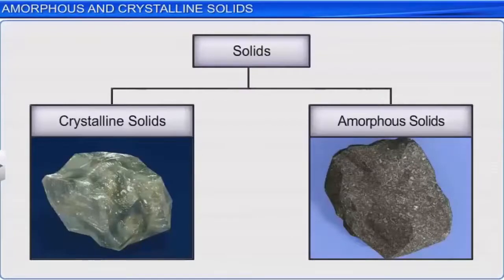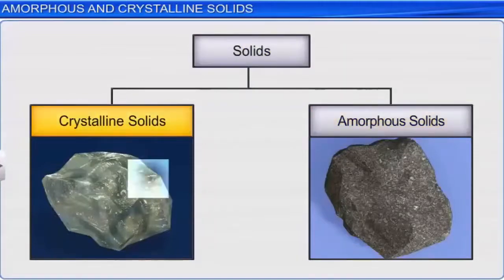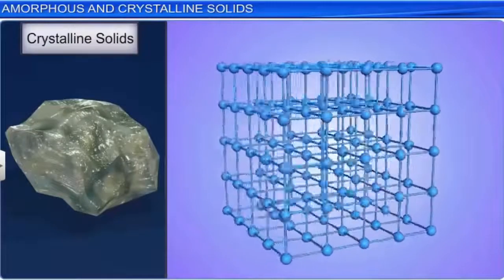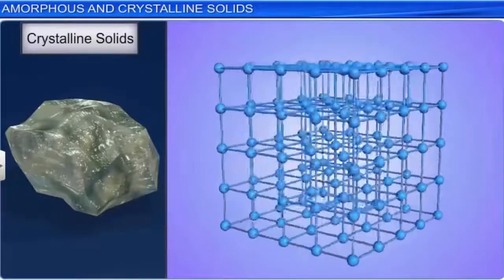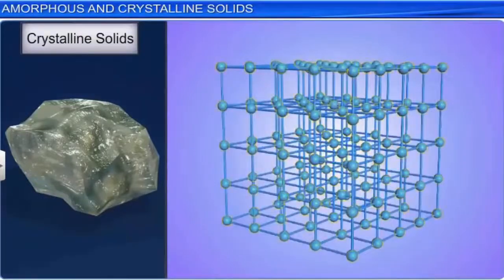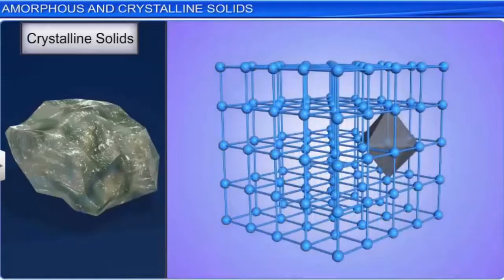Based on the arrangement of its constituents, solids are broadly classified into two categories: crystalline solids and amorphous solids. Crystalline solids have an orderly arrangement of their constituent particles, such as atoms, ions, or molecules, in three dimensions. They are arranged in an orderly manner to give a definite geometry to the crystal.